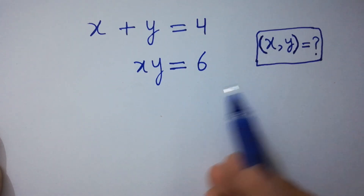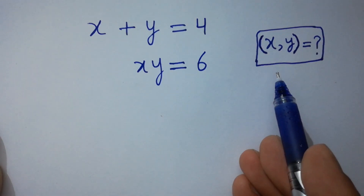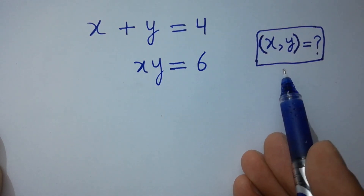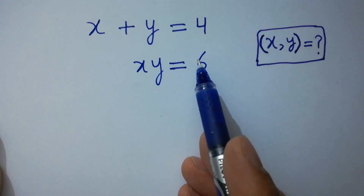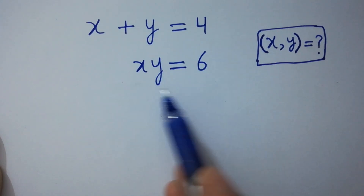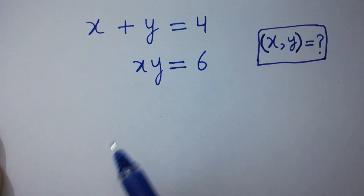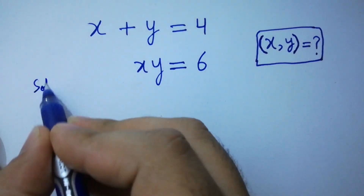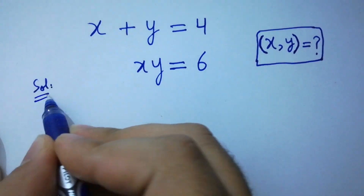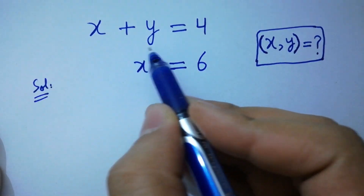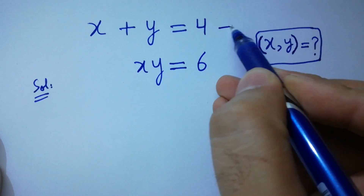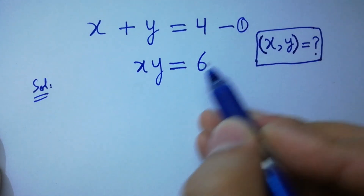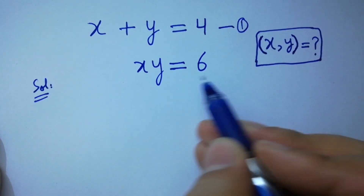Hello friends. Find the value of x and y if x plus y equals 4 and x times y equals 6. Let x plus y equal to 4 as the first equation and x times y equal to 6 as the second equation.